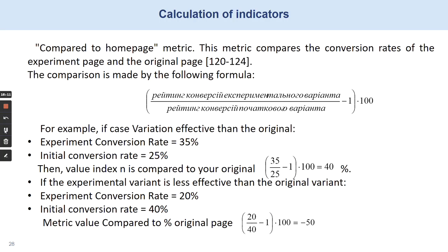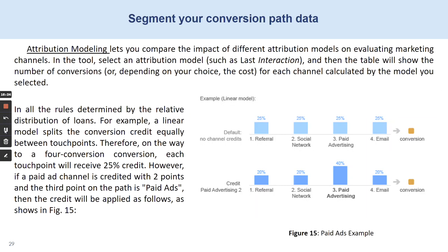Compared to homepage metrics, this metric compares the conversion rates of the experience page and the original page. The comparison is made by the following formula. Attribution modeling lets you compare the impact of different attribution models on evaluating marketing channels. The tool selects an attribution model, and then the table shows the number of conversions for each channel calculated by the selected model. Here you can see a paid ads example.